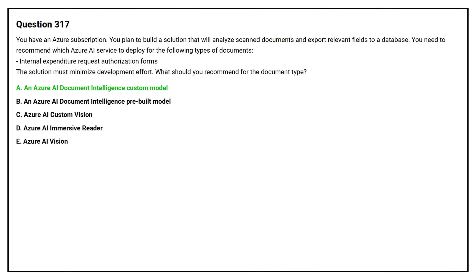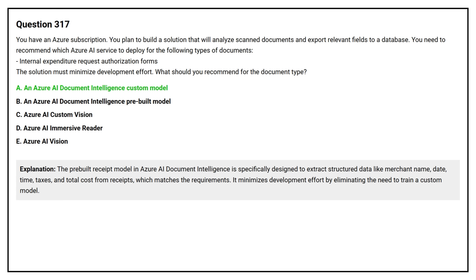The correct answer is an Azure AI Document Intelligence custom model. The pre-built receipt model in Azure AI Document Intelligence is specifically designed to extract structured data like merchant name, date, time, taxes, and total cost from receipts, which matches the requirements. It minimizes development effort by eliminating the need to train a custom model.